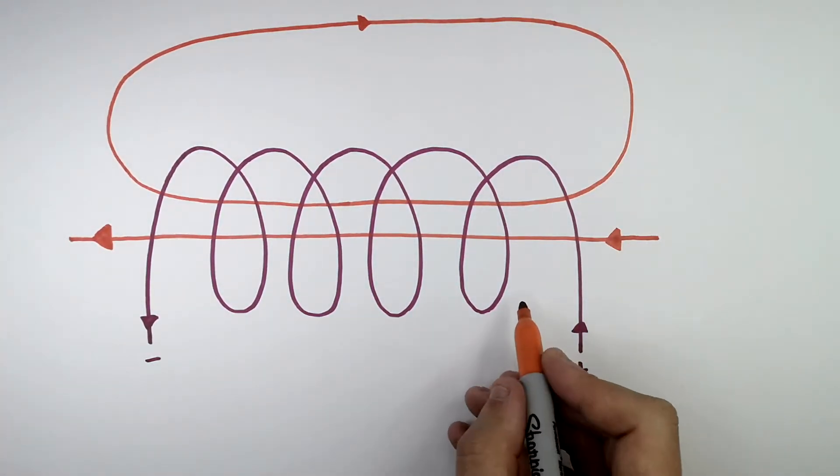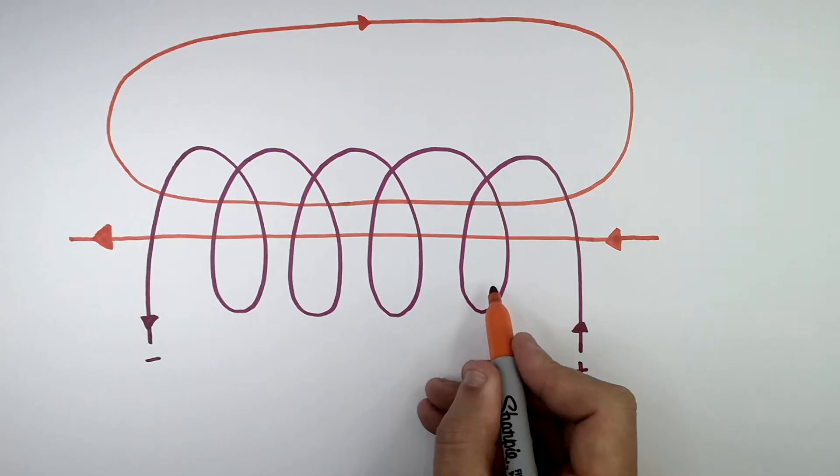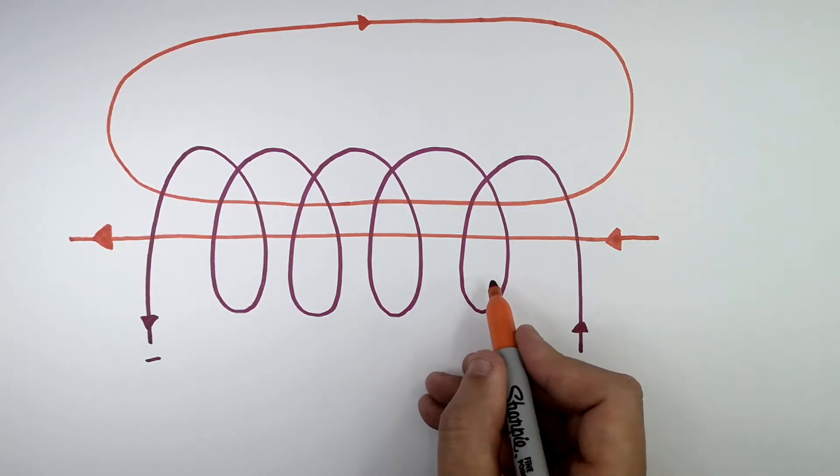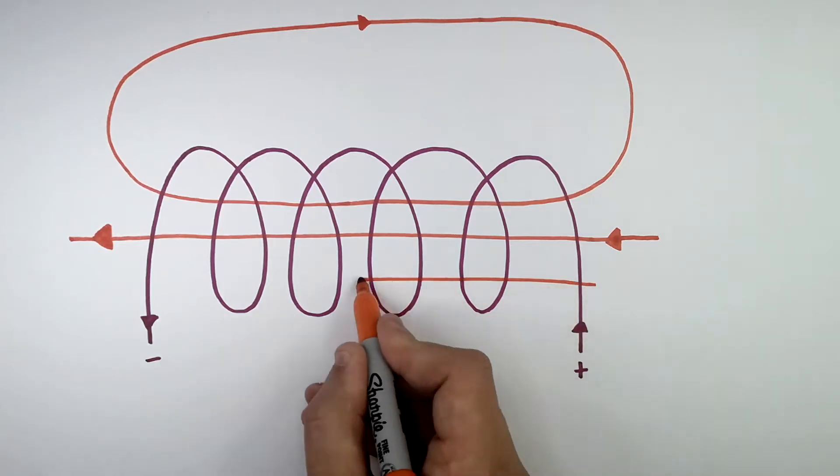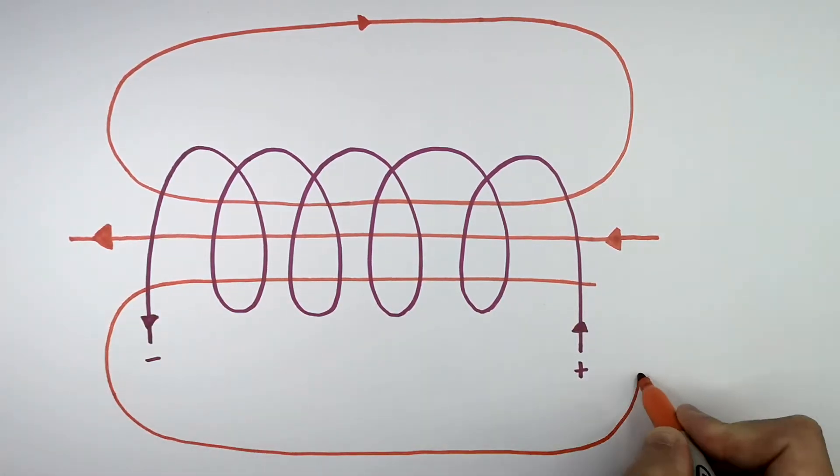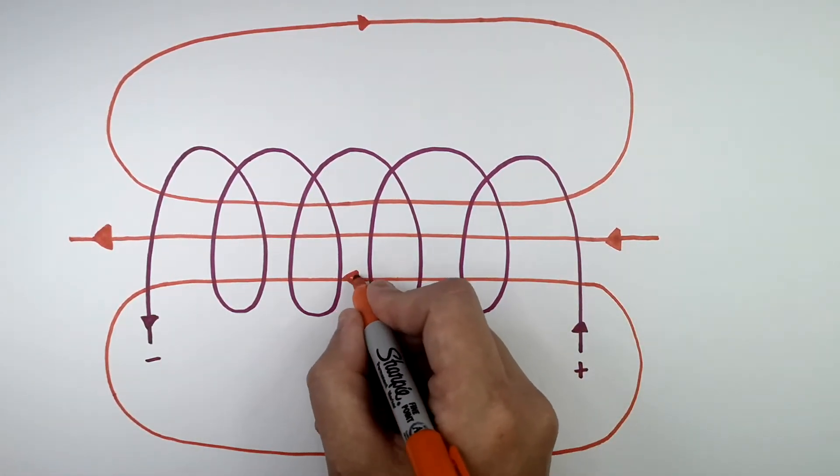The magnetic field that runs directly through the solenoid are all pointing in the same direction and they're very close to one another. The magnetic field inside the solenoid are uniform and strong.